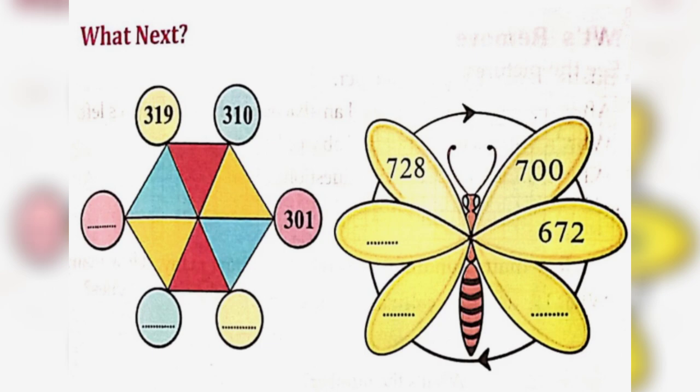What next? In the first figure, the difference is 9. So, the numbers will be 301, 310, 319, 328, 337, 346.